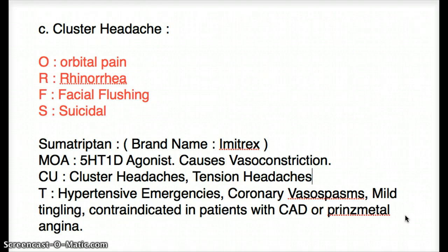The mechanism of action of Sumatriptan is vasoconstriction. It vasoconstricts by agonizing 5-HT1-D — it's a 5-HT1-D agonist. It's important to know that it specifically targets 5-HT1-D.